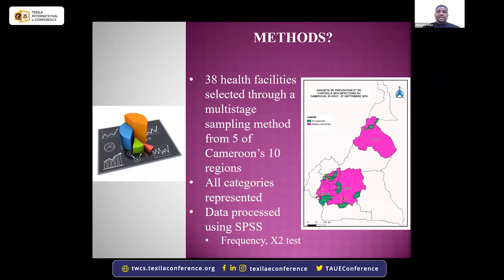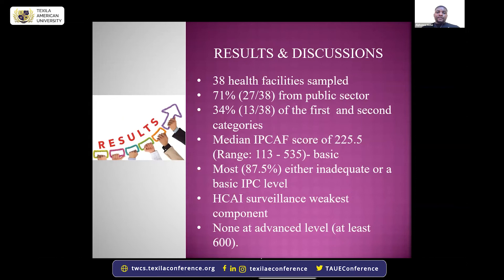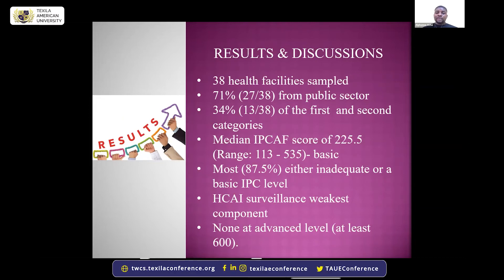Data were entered and analyzed using SPSS. Frequency tables and chi-square tests were used to measure categorical data. Of the 38 health facilities sampled, 71% were from the public sector, and 34% were from the first and second categories—reference and regional hospitals. The median IPC score was 225.5 on a scale of 800, with the lowest facility scoring 113 and the highest scoring 530.